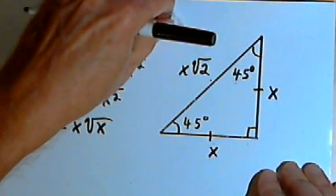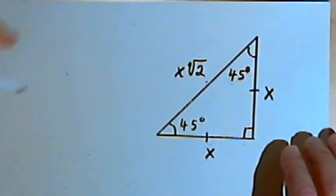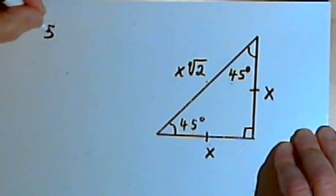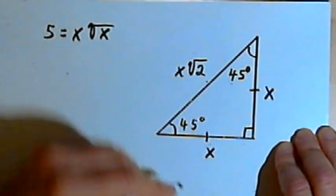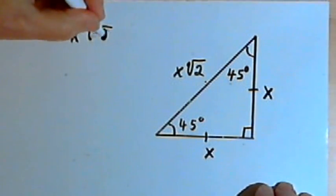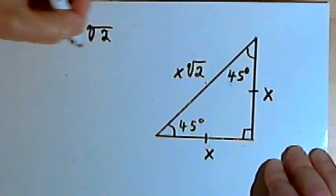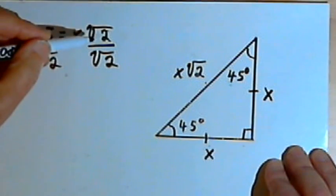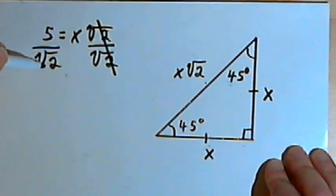Now let's see what happens if you're given the hypotenuse and want to find the leg. Say the hypotenuse is 5 inches. So 5 equals x times the square root of 2, and we want to find x. To solve this equation, divide both sides by the square root of 2. The square roots on the right cancel, giving x equals 5 over the square root of 2.